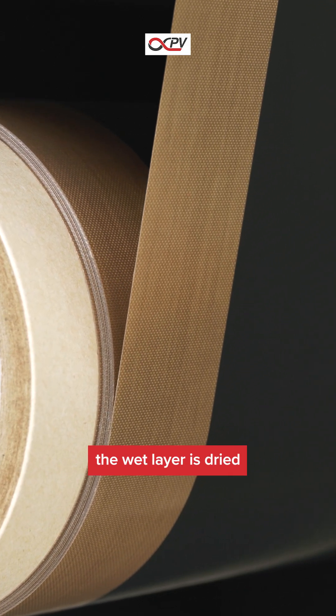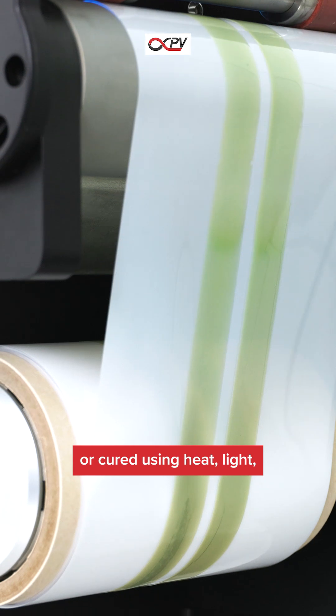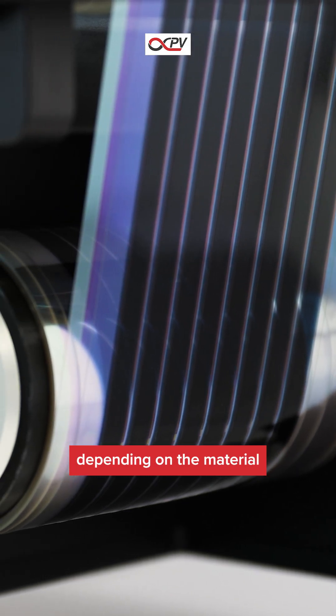After coating, the wet layer is dried or cured using heat, light, or special gas, depending on the material you're working with.